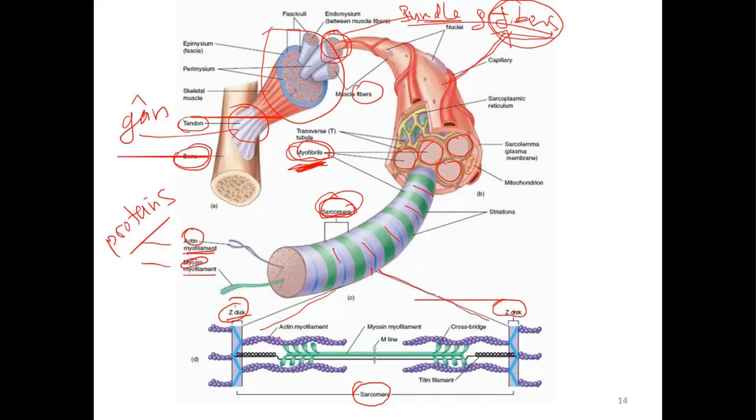And this is a myofilament of actin - it's a protein, actin. This one is a myosin protein. They are linked together like that. The actin filament is called thin filament, and the myosin is a thick filament, thicker.